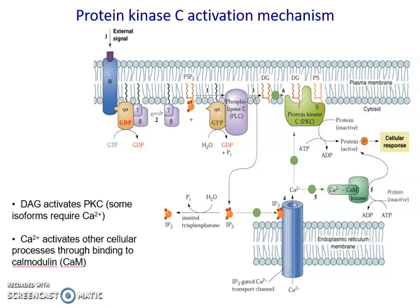I think this diagram explains quite well what's happening in protein kinase C activation, but to put it into words: we start with a ligand that binds to the G-protein coupled receptor. This is only true of the particular isoform we're talking about in this case, which is phospholipase C beta. You need to make sure that it is in fact an isoform that is dealing with a G-protein coupled receptor rather than something like a receptor tyrosine kinase. So in this case, we are dealing with a G-protein coupled receptor.